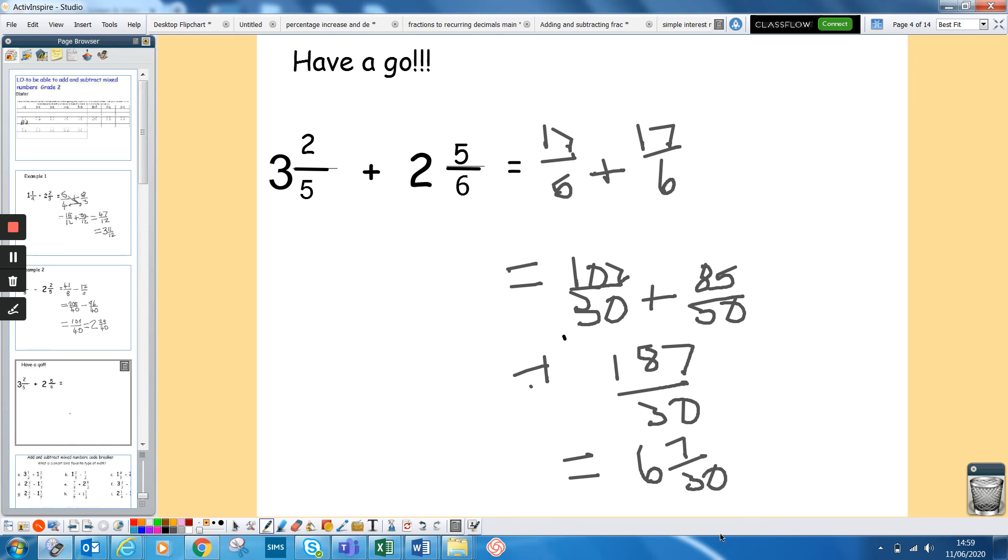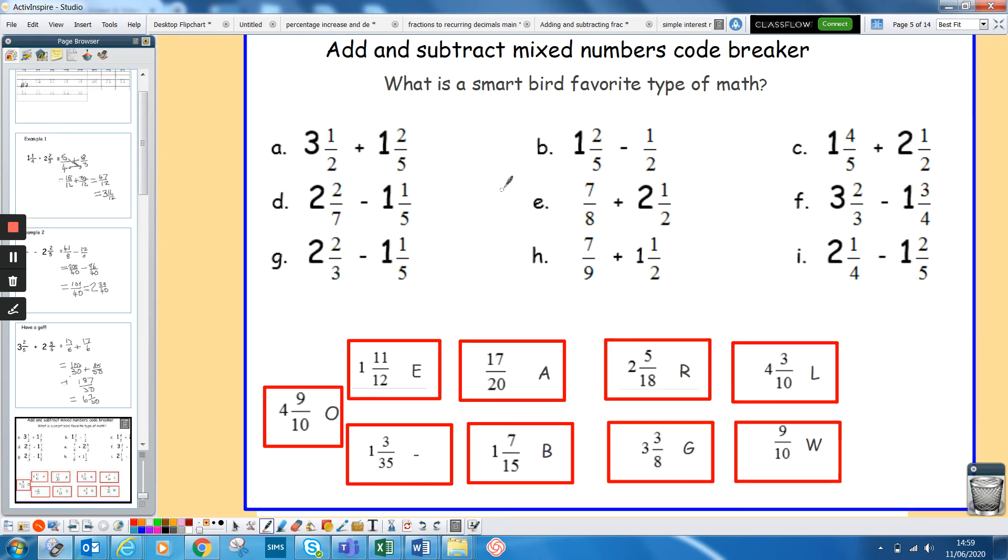Hopefully you got that and have a go at these questions here. Just remember, people always ask me on this one, if this one's seven eighths, there's no number in front of it. Same as it's half, it just stays as seven eighths. You only have to change that one to a top-heavy fraction on this. With this one it's got a little bit of a code breaker to it as well. You add it together, find your answer, and whatever answer is one of these letters and spell out the answer to: What is a smart bird's favourite type of maths?